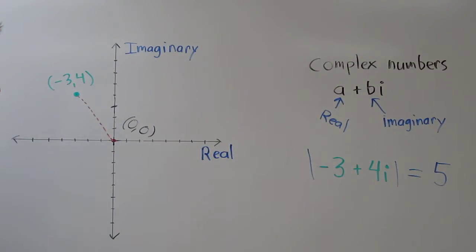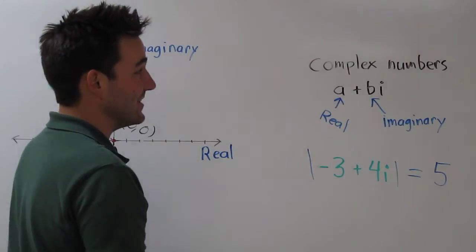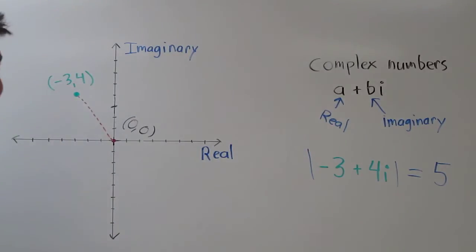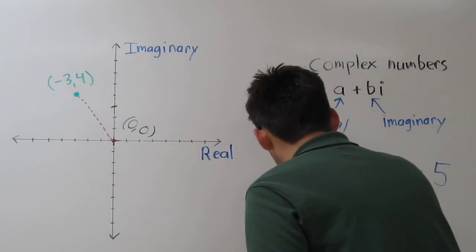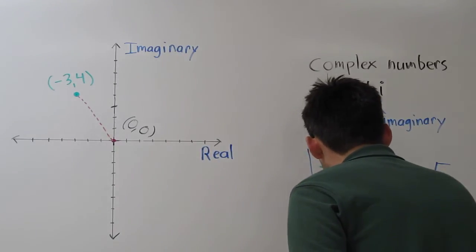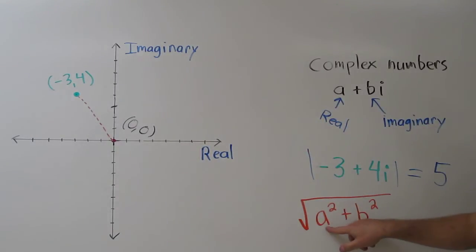Now, because we're always comparing our complex number to the origin, there's actually a shortcut for the distance formula. To find the absolute value of a complex number, find the square root of a squared plus b squared, where a is our real part and b is our imaginary part.